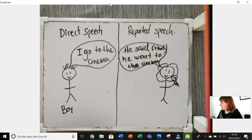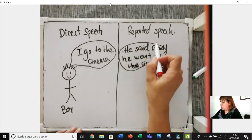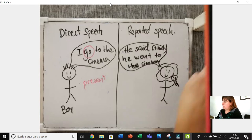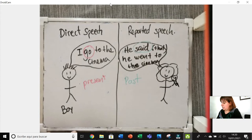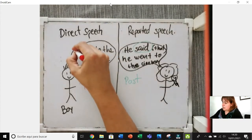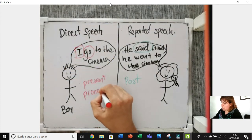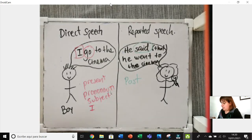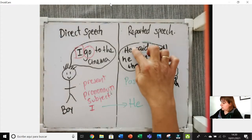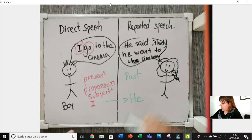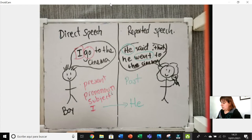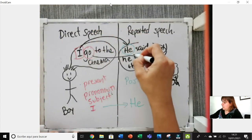He said that he went to the cinema. So what are the changes in reported speech compared to direct speech? In direct speech we use the present — this is the verb — and in reported speech we use the past. We also change the pronoun or subject: here it's 'I', and in reported speech it becomes 'he'. So 'go' changes into 'went', and 'I' changes into 'he'.